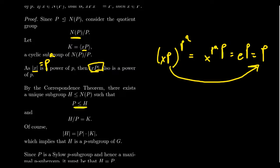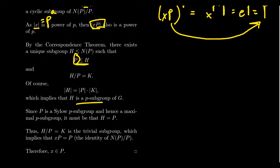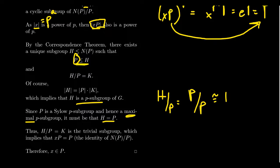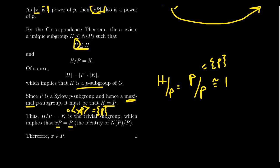But H is a P-subgroup that contains P, and P is a Sylow-P subgroup — a maximal P-subgroup. By maximality, H and P must be the same group. Therefore H mod P is just P mod P, the trivial subgroup. So K is trivial, meaning xP = P, which implies x belongs to the Sylow-P subgroup P itself. This proves the first lemma.